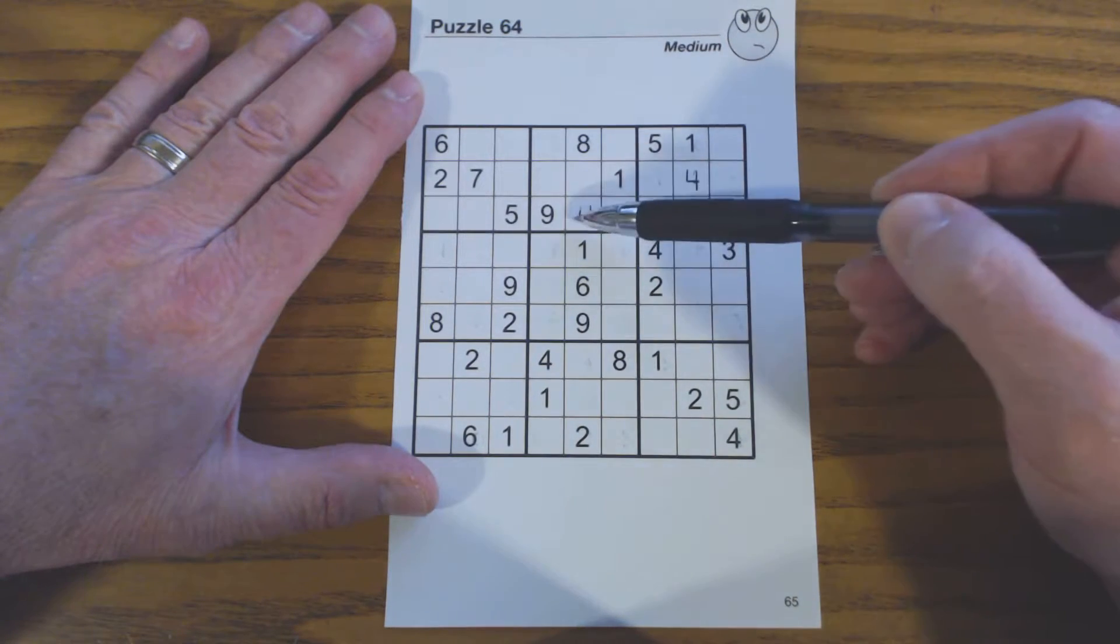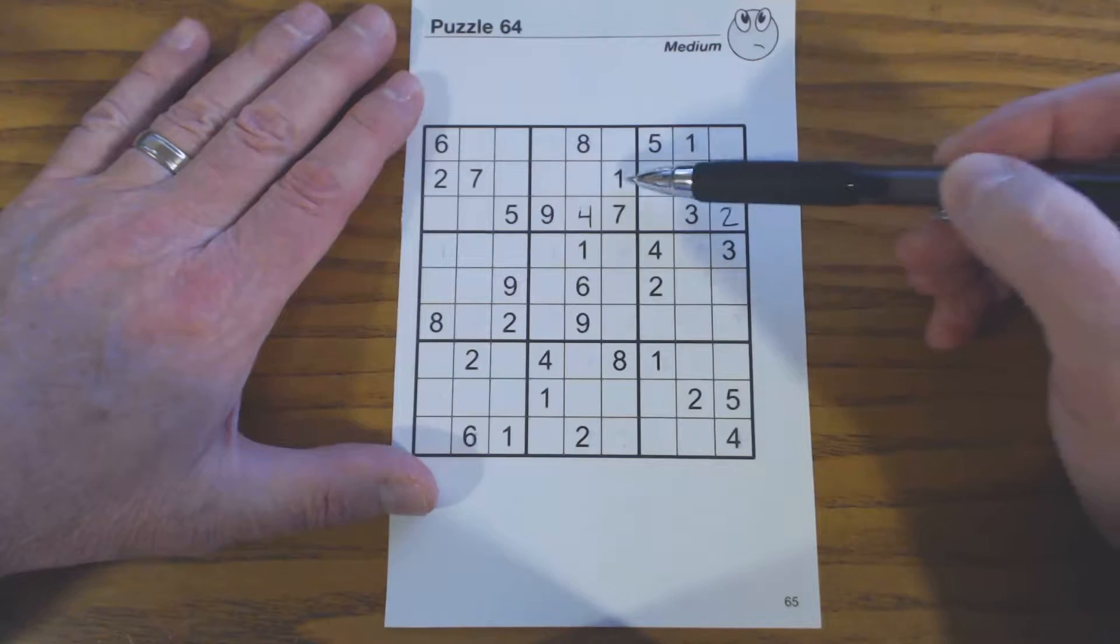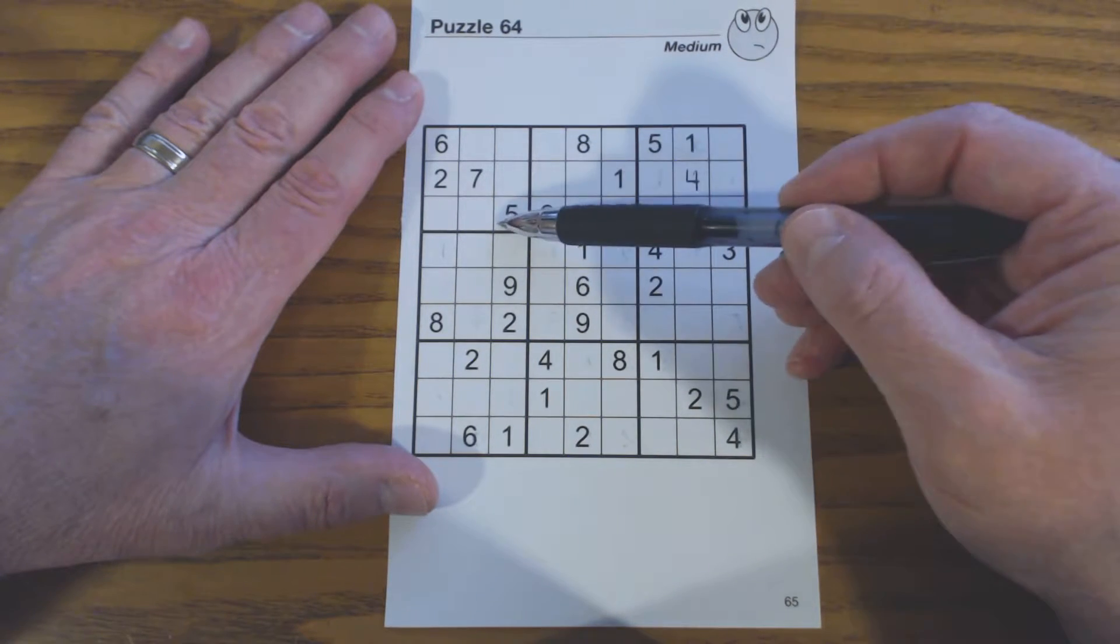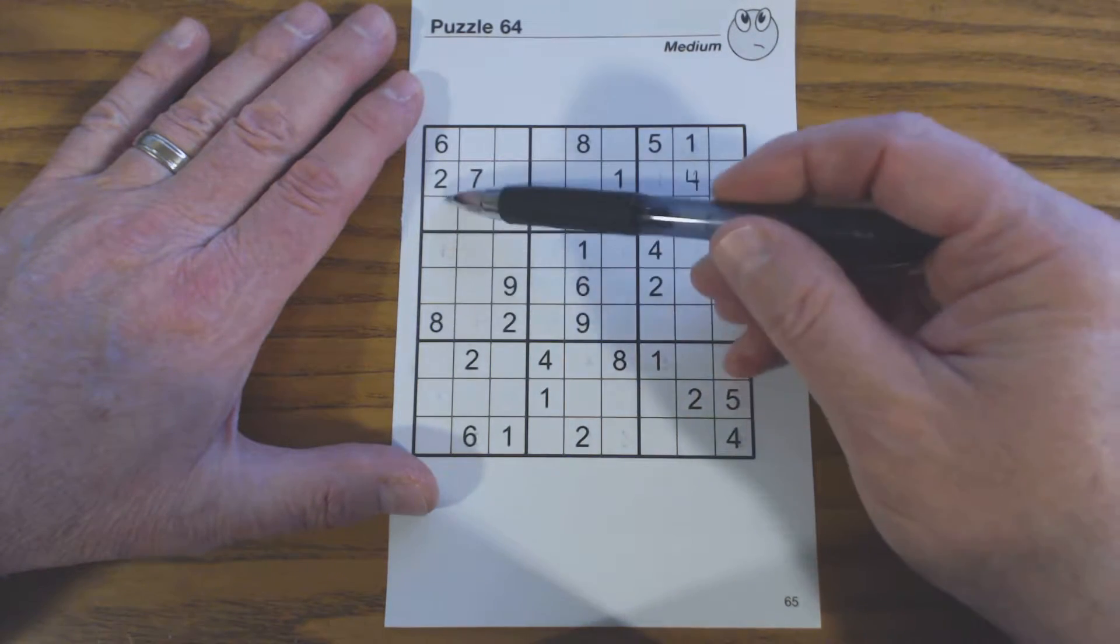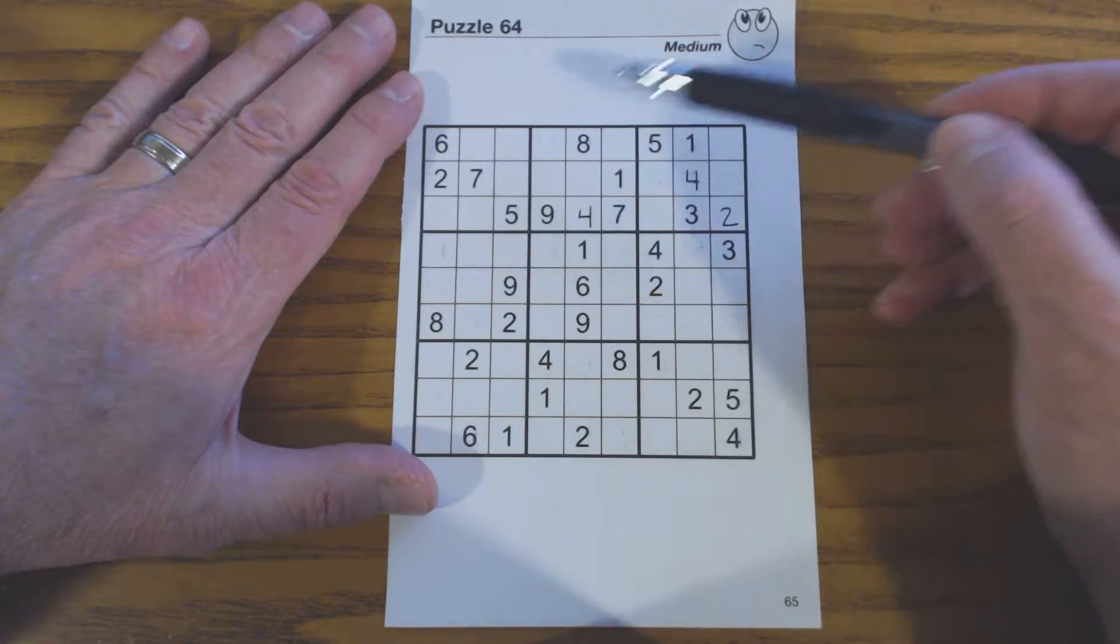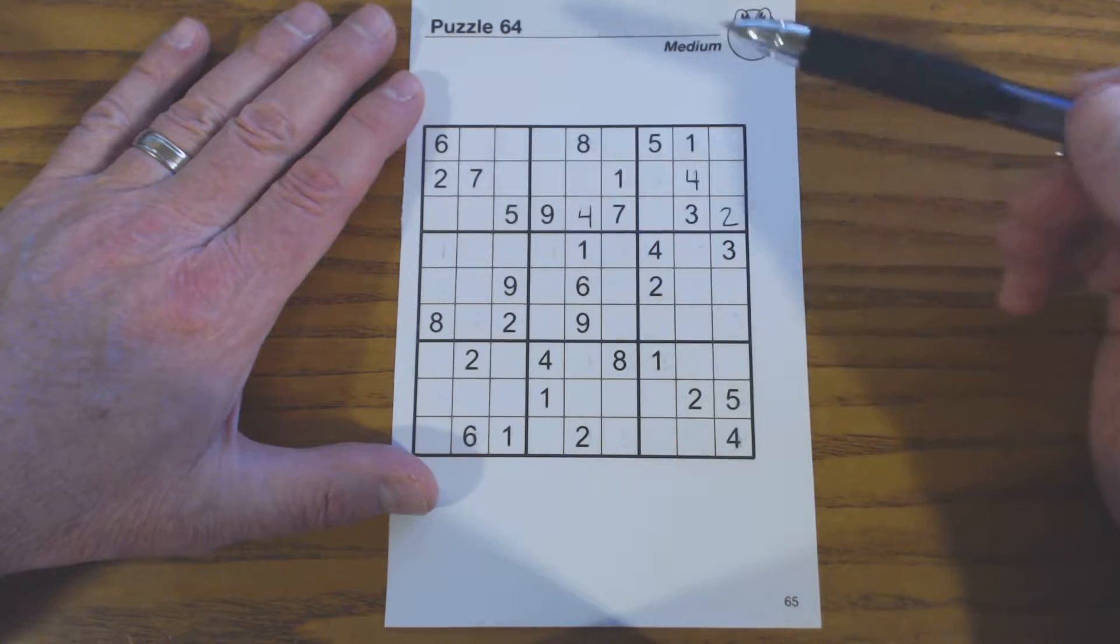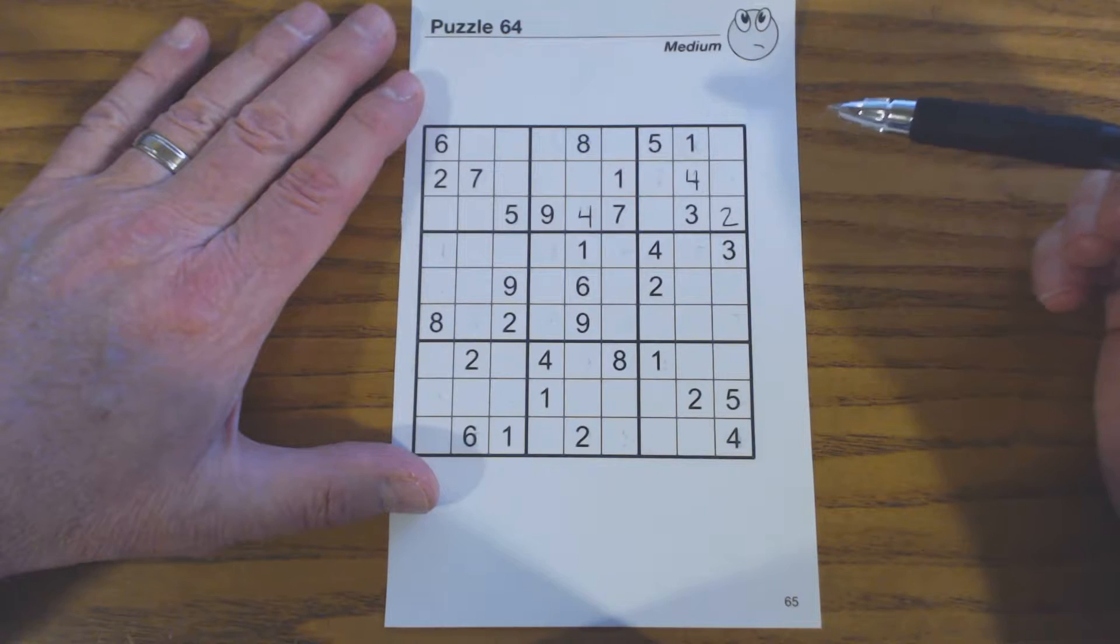And so you've got a 4 over here, no, that won't work. A 1, a 5, there's a 5 there already. 8, 8s are here, so that won't work. So it doesn't look like we have twins there.